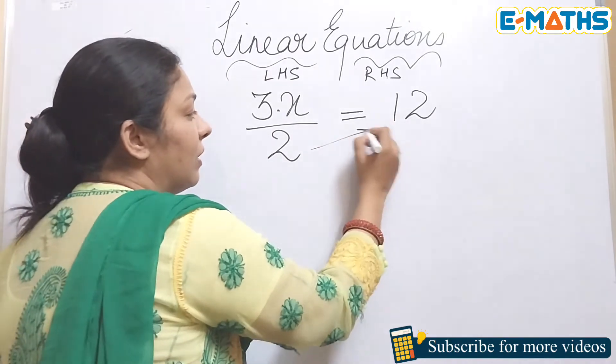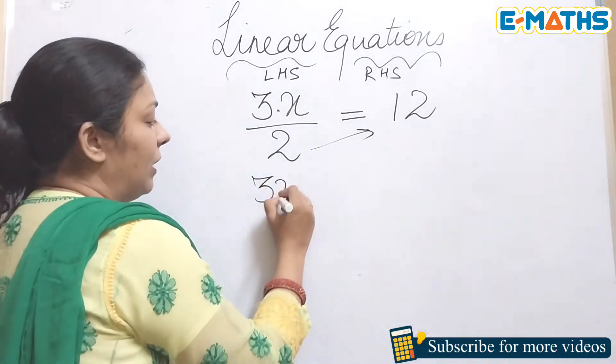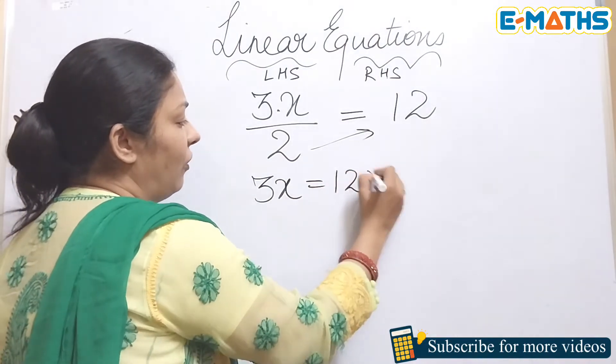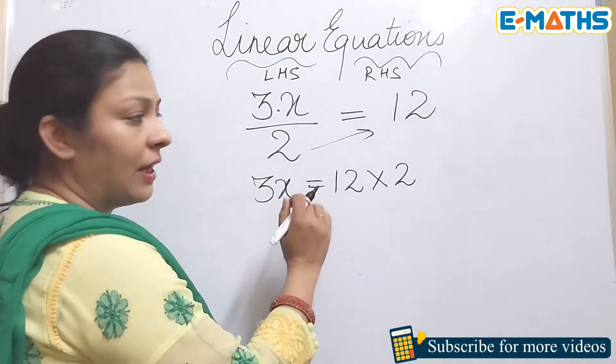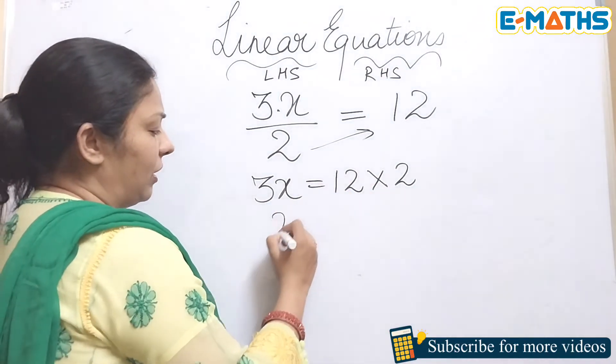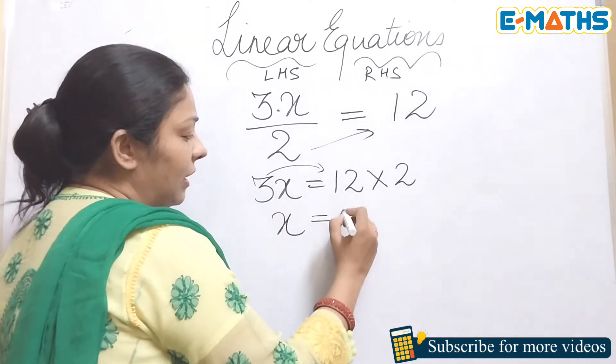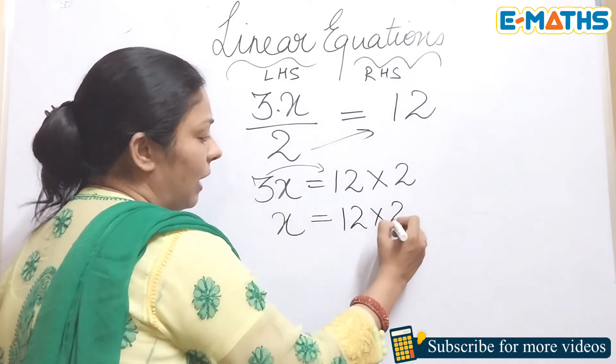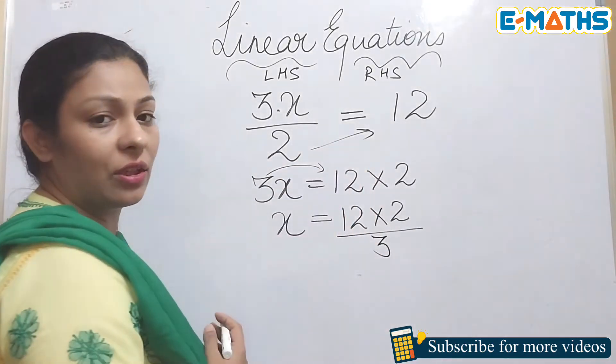To remove it, here it is in division. When I transpose it, it will go on the other hand side and it will take the sign of multiplication. Now in the next step, you can either solve this set or you can transpose this on the other hand side. I'm going to transpose this 3 also on the other hand side, keeping this 12 times 2 as it is. I'll bring this 3 down in the denominator.